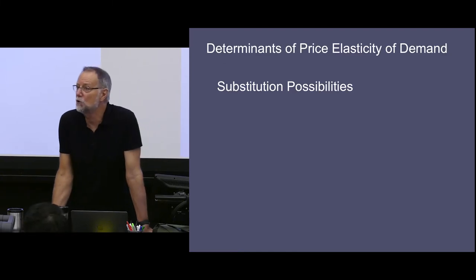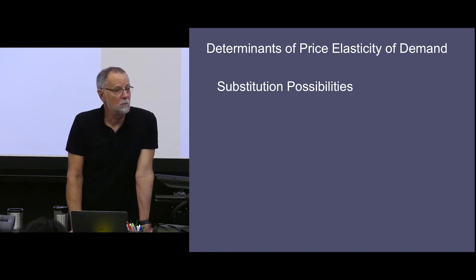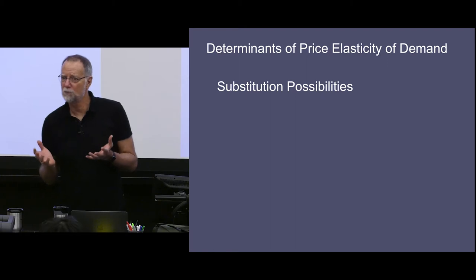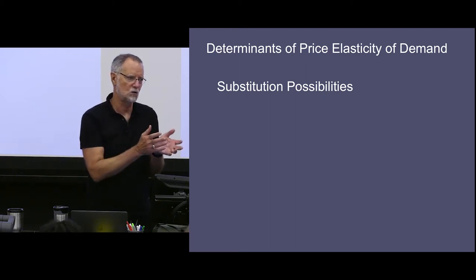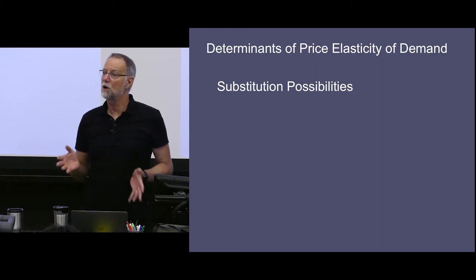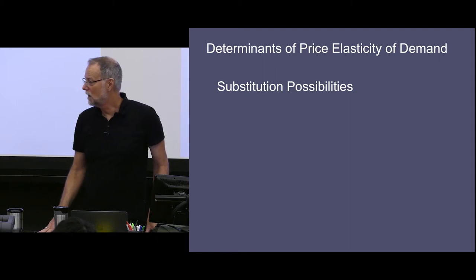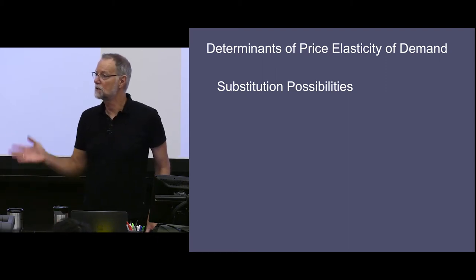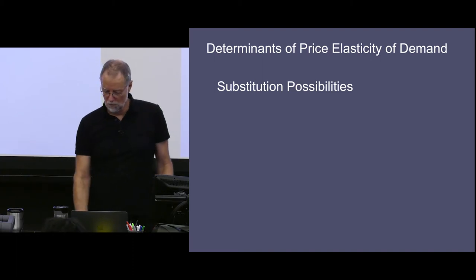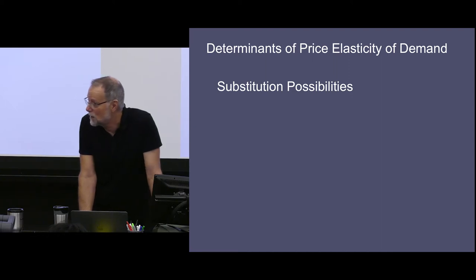What determines whether a good will be demanded elastically or not? The most important factor is this: you're buying a good to achieve some goal. If there's another good that achieves the same goal almost as effectively at no extra cost, you'll switch when the price rises. If there's no good substitute, you'll keep buying.